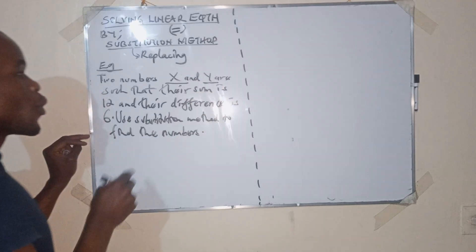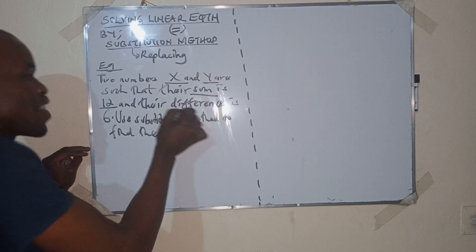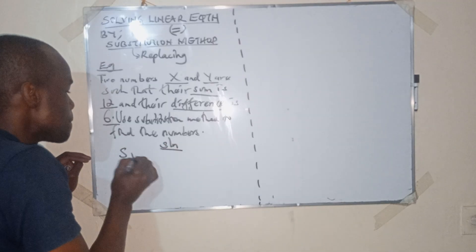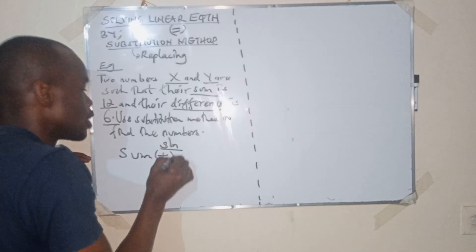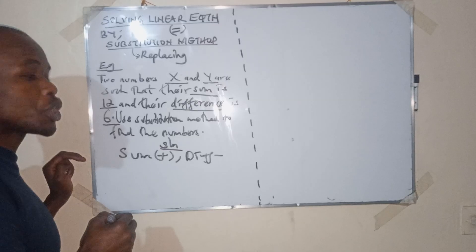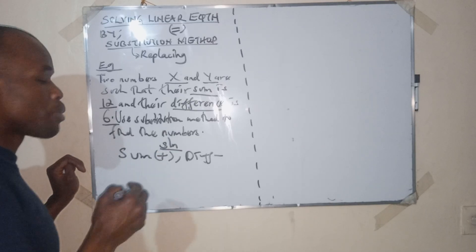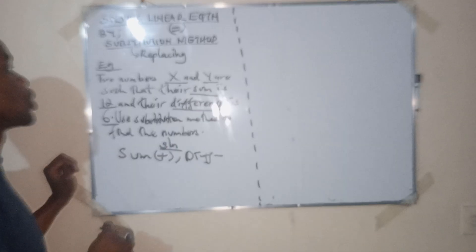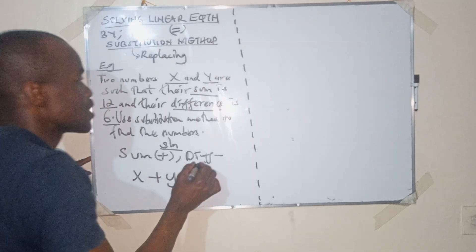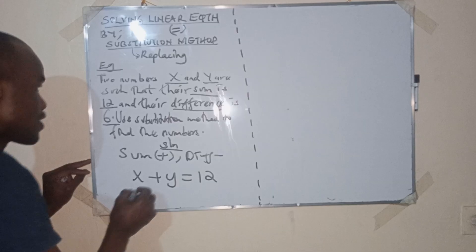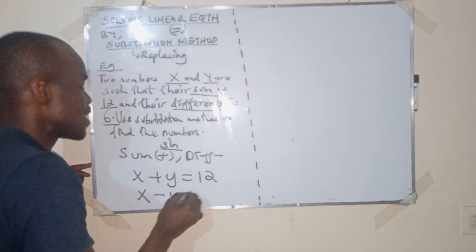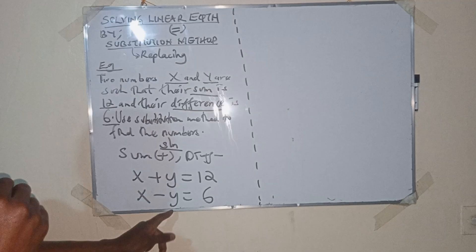Sum means addition. Difference means subtraction. Quotient means division. Product means multiplication. So addition of x plus y gives us 12, and subtraction x minus y gives us 6.